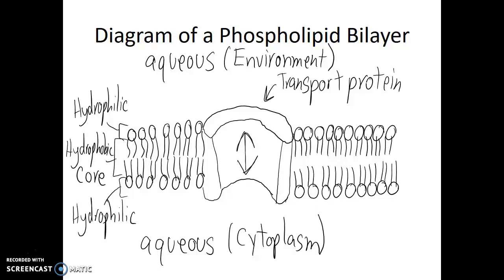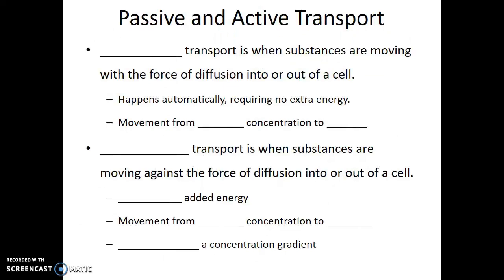So we have a diagram of the plasma membrane: a phospholipid bilayer with a transmembrane protein, in this case a transport protein. This barrier allows certain molecules to pass through, but blocks others. If you recall from the previous video, molecules move from areas of high concentration towards areas of low concentration through diffusion. If the movement of these molecules is into or out of the cell and it's done with the force of diffusion, we call this passive transport. Passive transport happens automatically, requires no extra energy, and is always movement from high concentration to low concentration.